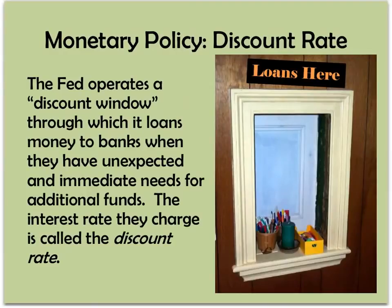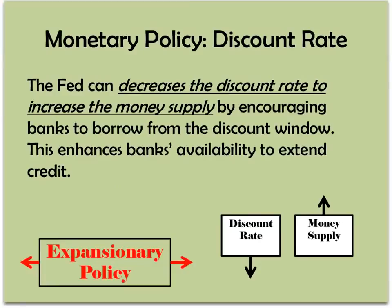The third and final tool is the discount rate. The Fed operates the discount window, through which it loans money to banks when they have unexpected, immediate needs for additional funds. That's where banks go to borrow money from the Fed. The Fed could decrease the discount rate to increase the money supply, encouraging banks to borrow from the discount window. This would increase banks' excess reserves, enhancing their ability to extend credit. When banks make loans, they create money — so lowering the discount rate expands the money supply.